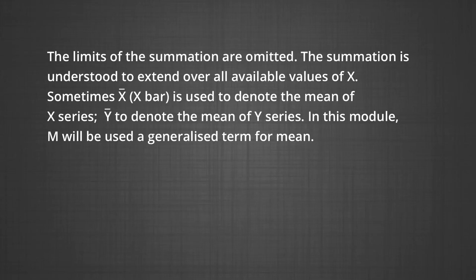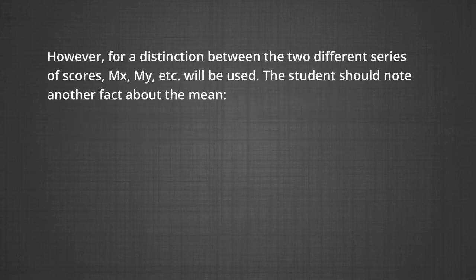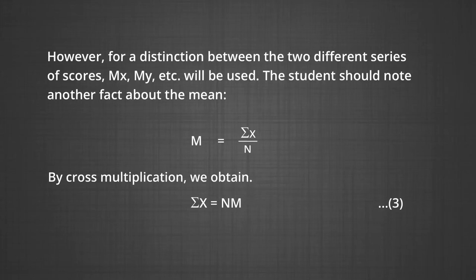Sometimes x-bar is used to denote the mean of the x series, and y-bar to denote the mean of the y series. In this module, M will be used as a generalized term for mean. For distinction between two different series of scores, mx and my will be used. The student should note that since M equals sigma x upon n, by cross multiplication we obtain sigma x equals n times M. Thus, the sum of a variable x is n times the mean of x — a useful concept used in a variety of situations.